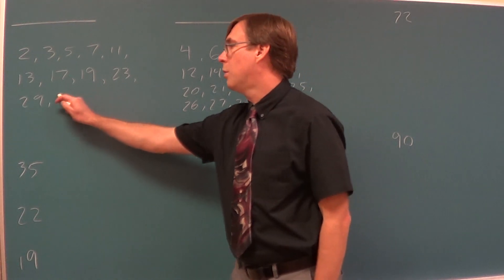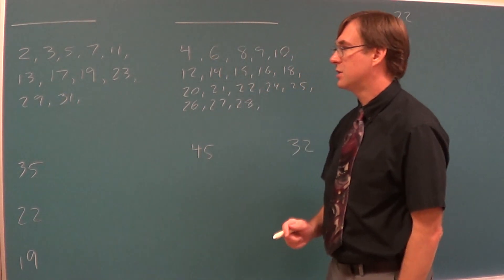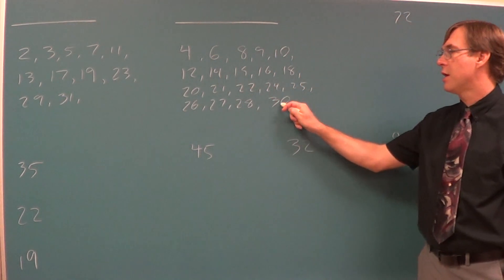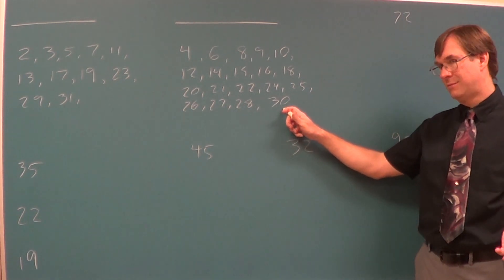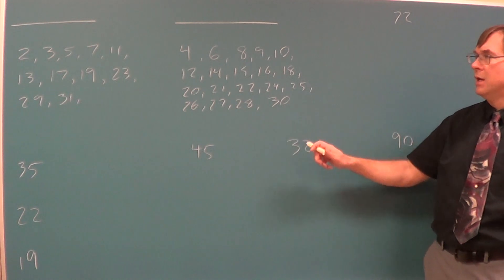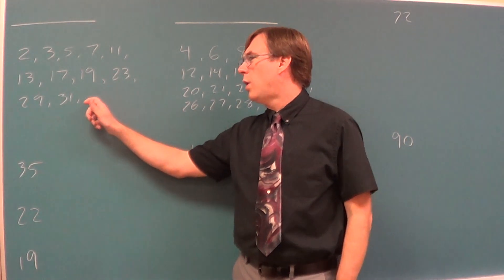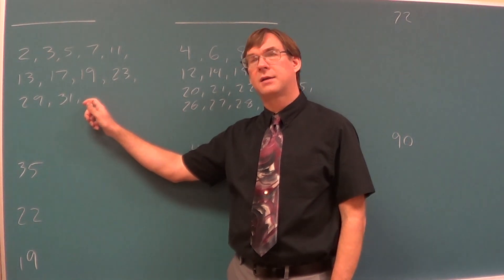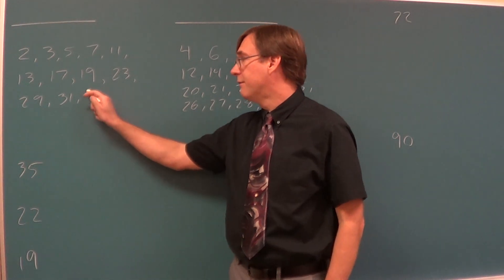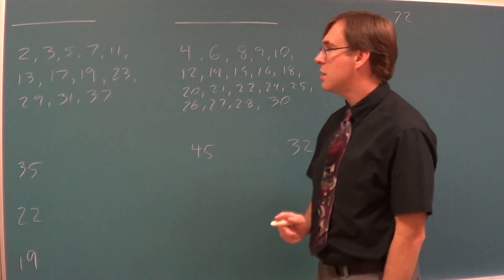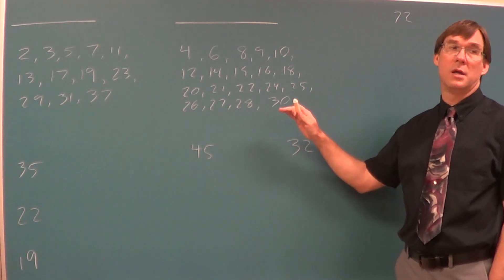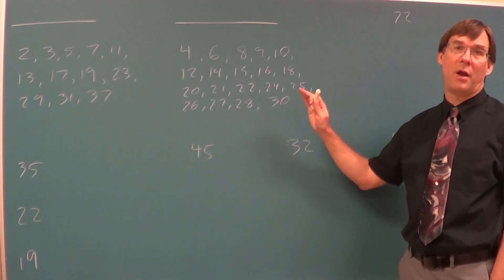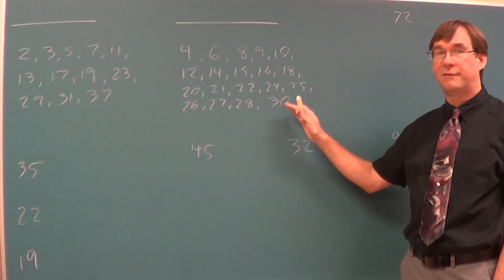So who's going to be the next number that gets to go over there? Thirty-one is the next one that really stuff doesn't go into. Thirty goes over here. Why does thirty get stuck over here? Three, five, six, ten, lots of stuff. Let's go one more. Thirty-seven is going to be next. Not thirty-three. Not thirty-five. Why not thirty-three? Three. Why not thirty-five? Five. Okay.